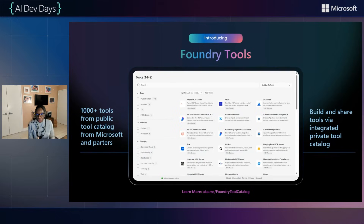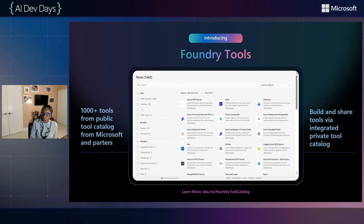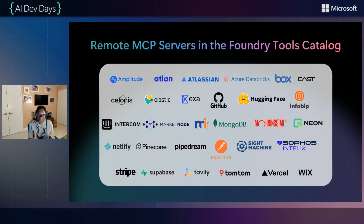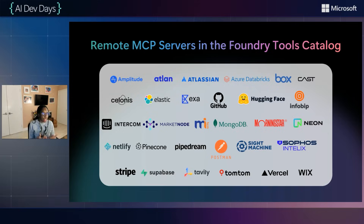This year at Ignite, we introduced Foundry Tools. Foundry Tools has over 1,000 tools from public catalogs and Microsoft partners that you can leverage in your Foundry agent today. You can build and share these via a private tool catalog that you can host for yourself, or you can access them through a public one — the Foundry Tools catalog or the GitHub one. We have worked with multiple partners to build a robust and diverse group of tools, from analytics to developer to data and so many more, to make sure you can build the agents you need to solve the problems you need solved.